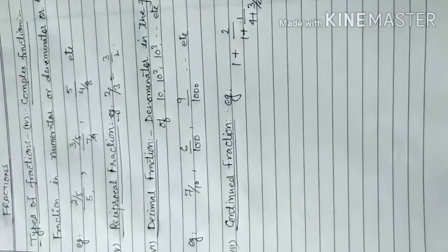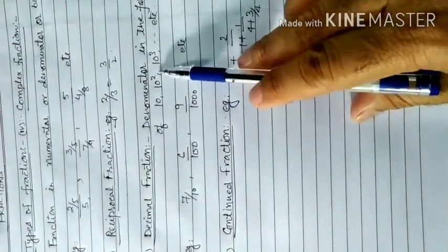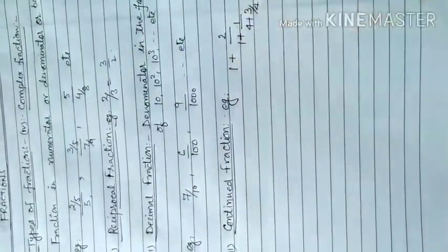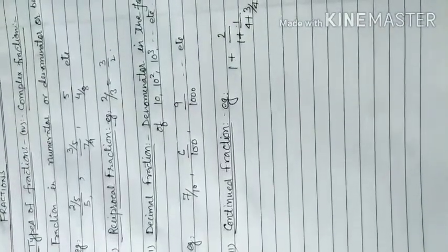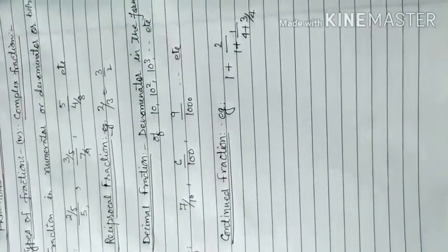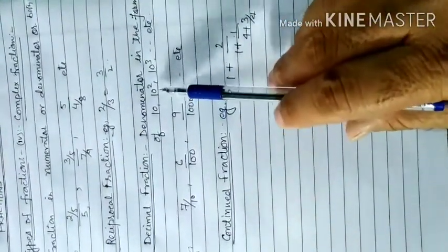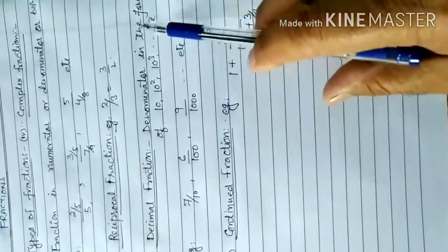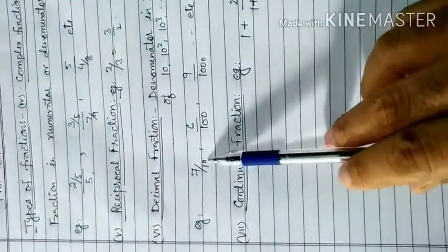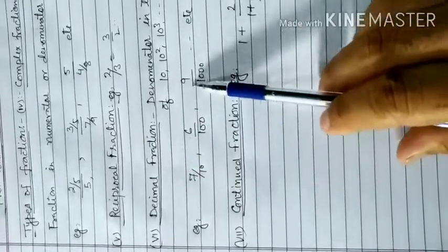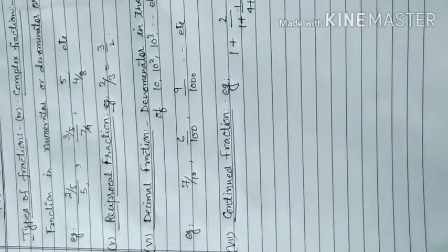Now the next type is decimal fraction. A decimal fraction is one whose denominator is in the form of powers of ten — 10, 100, 1000, and so on.